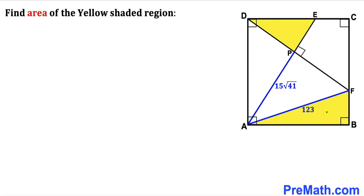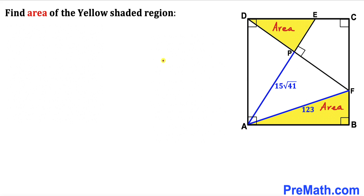Welcome to pre-math. In this video we have these yellow shaded triangles ABF and triangle EPD, fully confined in a square ABCD, such that angle EPF is 90 degrees. Moreover, line segment AF is 123 centimeters whereas segment AP is 15 times square root of 41 centimeters. Our task is to calculate the area of this yellow shaded region — these two areas combined.